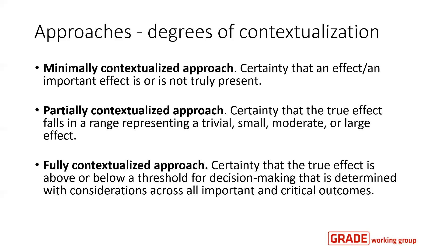If we use the fully contextualized approach, we are rating our certainty that the true effect is above or below a threshold for decision-making. This threshold is set considering all other important and critical outcomes and consequences, and their associated values and preferences. We are essentially asking: given everything we know about all other outcomes, what do we require from this individual outcome to want to recommend the intervention?